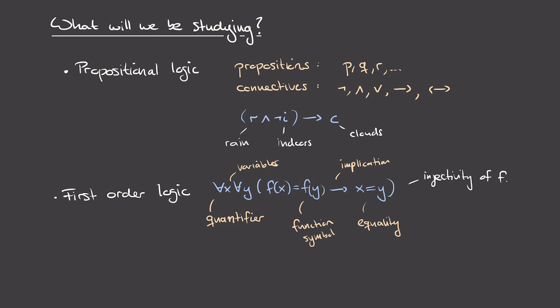In this first order logic formula, we've broken down the atomic propositions of propositional logic even further. For instance, 'f(x) = f(y)' could be interpreted as a proposition p(x,y) and 'x = y' as a proposition q(x,y) — predicates on x and y. We still need to quantify over all x and y in order to make a statement that is true or false; otherwise its truth value could depend on which x or y you choose. In the case of injectivity, we want this to hold for all x and y in our set. So first order logic can be interpreted as a refinement of propositional logic that incorporates reference to elements of sets.